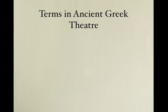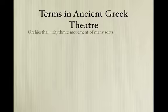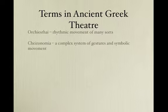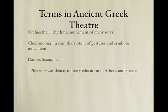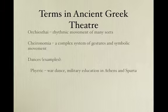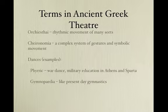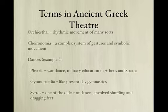Some terms from ancient Greek theater relate to words we use in dance today. Orchesis means rhythmic movement of many sorts — many dance companies are called Orchesis. Chironomia is a complex system of gestures and symbolic movements, and you can see the roots of the word 'choreography' there. Specific dances include the pyrrhic, a war dance used as military education in Athens and Sparta; gymnopodia, similar to present-day gymnastics; and sirtos, one of the oldest dances, involving shuffling and dragging feet.